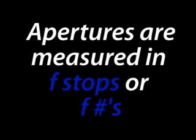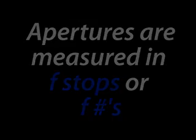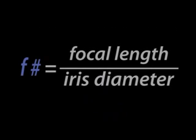The fourth and final rule has to do with how apertures are measured. Apertures are measured in something called f-stops. This term is actually a ratio of the focal length of the lens divided by the diameter of the opening of the shutter blades.